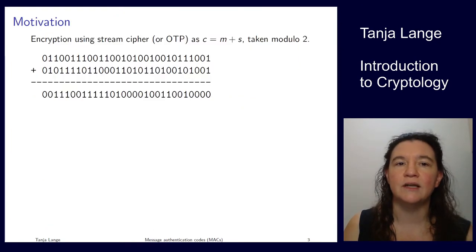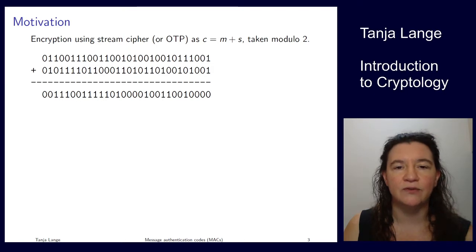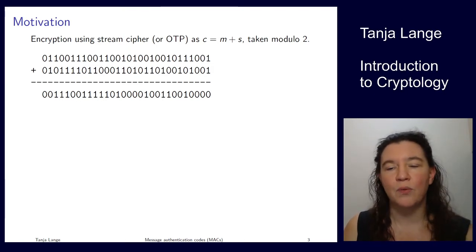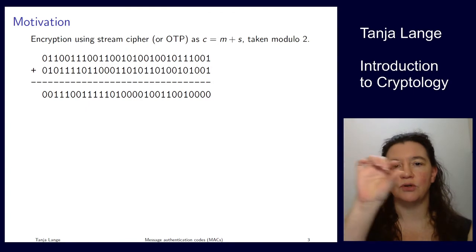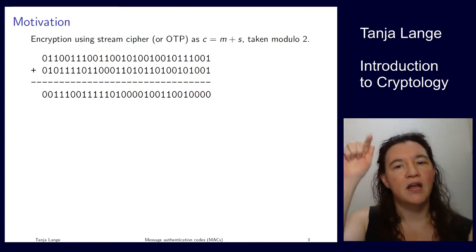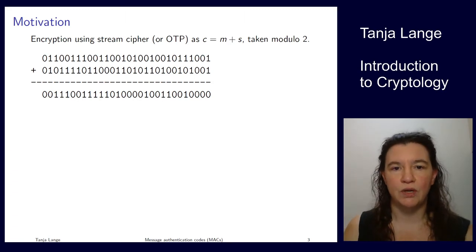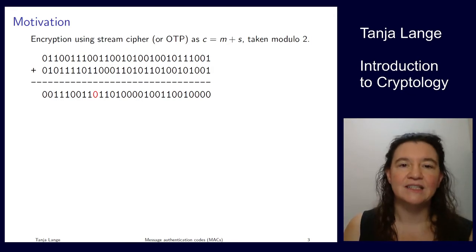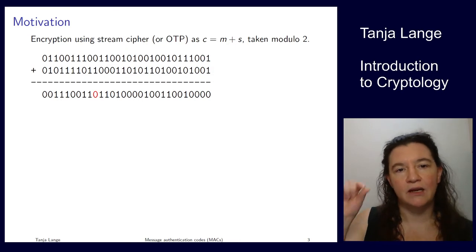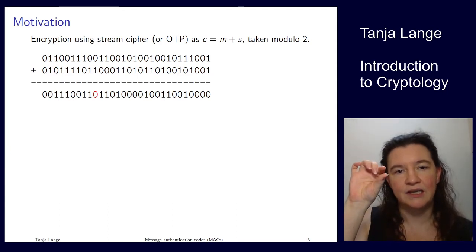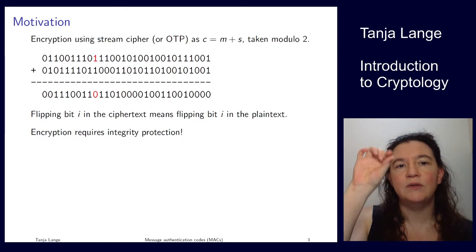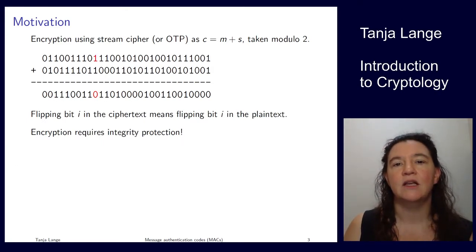This is very relevant if you look at what we have so far for stream cipher encryption — like the output of RC4 or one of the modern stream ciphers, or using the one-time pad. We have our message as a string of bits, the key also as a string of bits, and we add them position-wise modulo 2. If Eve flips some bit i, then when Bob gets this message and applies the pad, he will decrypt that flipped bit to 1. So flipping bit i in the ciphertext means effectively flipping bit i in the plaintext.